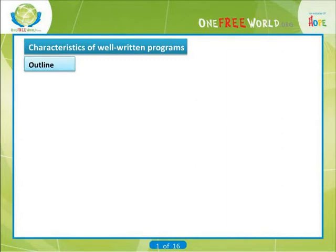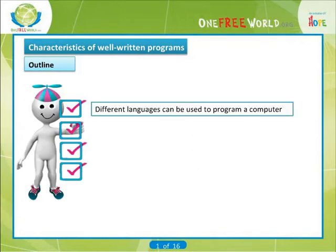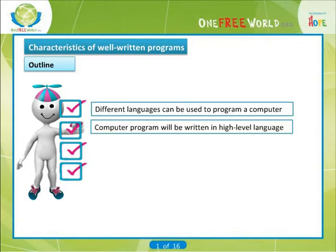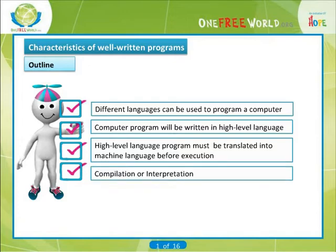Hello, in this video, the unit highlights some of the essential features that you need to bear in mind while writing programs. There are many different languages that can be used to program a computer. Usually, a computer program will be written in some high-level language whose instruction set is more compatible with human languages. A program written in a high-level language must, however, be translated into machine language before it can be executed. This is known as compilation or interpretation depending on how it is carried out.